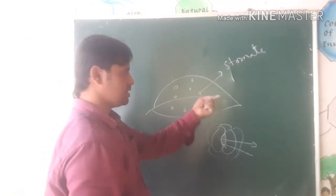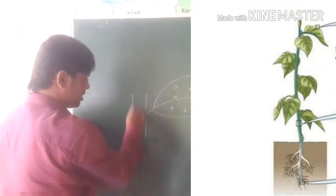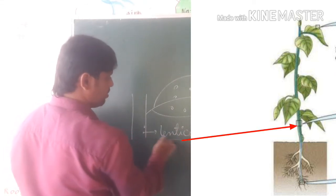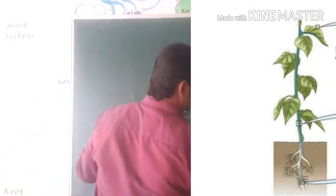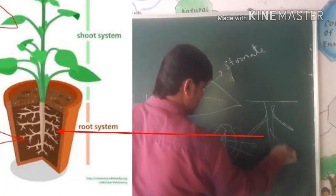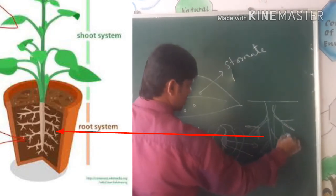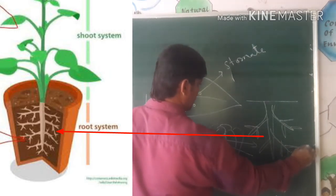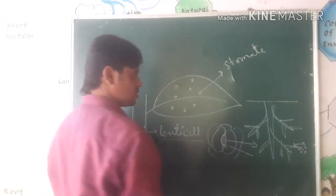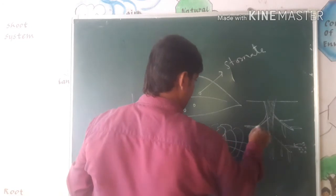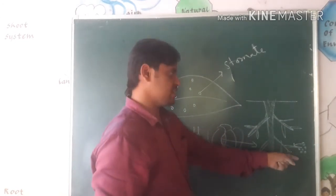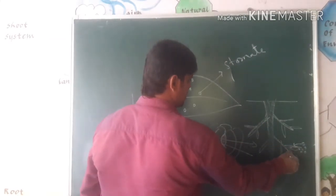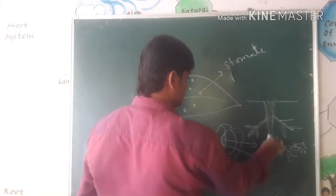Stomata are present in the leaf, and on the stem there are holes called lenticels. Lenticels can also perform respiration. Plants also respire through the roots — root hairs are present in the soil and whatever air is present between the soil particles can be taken by the root hairs. Like earthworms, plants also take the air present between soil particles through their root hairs.